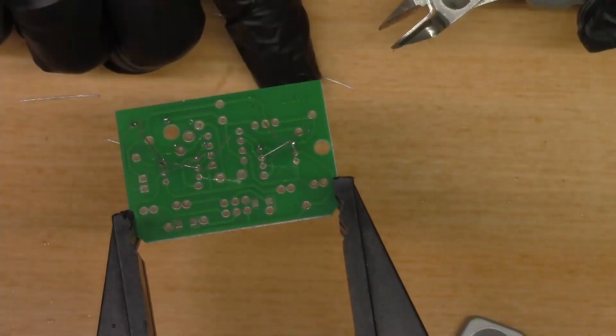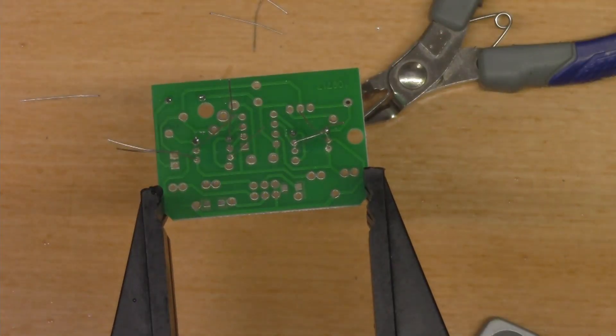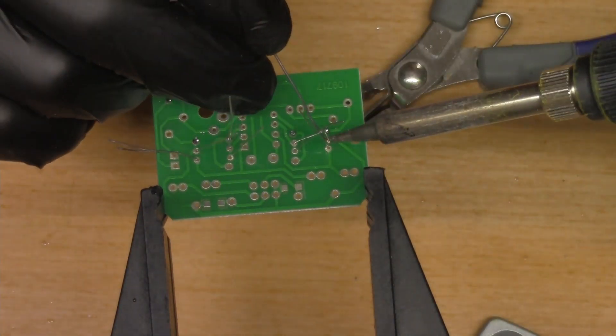Just soldering these seven resistors real quick here, clipping these leads off. And again, always be careful these things don't pop out and try to take out your eye, so it's always a good idea to have some safety glasses on.